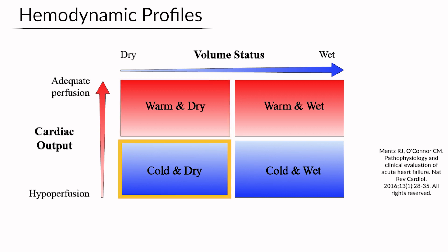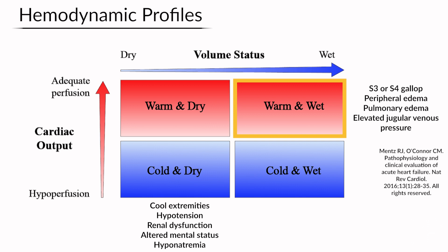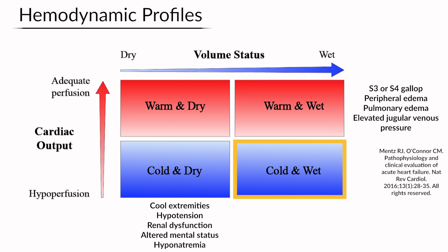In the southwest quadrant we have cold and dry — patients with low cardiac output who present with cold extremities, hypotension, renal dysfunction, altered mental status, or hyponatremia. In the northeast quadrant is warm and wet, the profile of patients with volume overload, presenting with an S3 gallop, peripheral edema, pulmonary edema, and elevated jugular venous pressure. In the southeast quadrant is cold and wet, corresponding with decompensated heart failure and shock, uncommon outside of the cardiac intensive care unit.